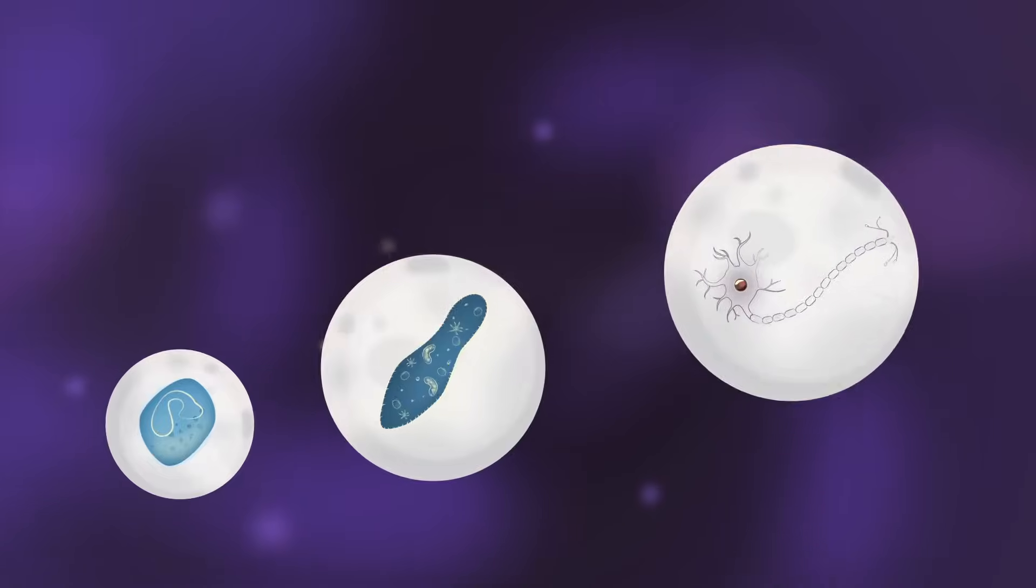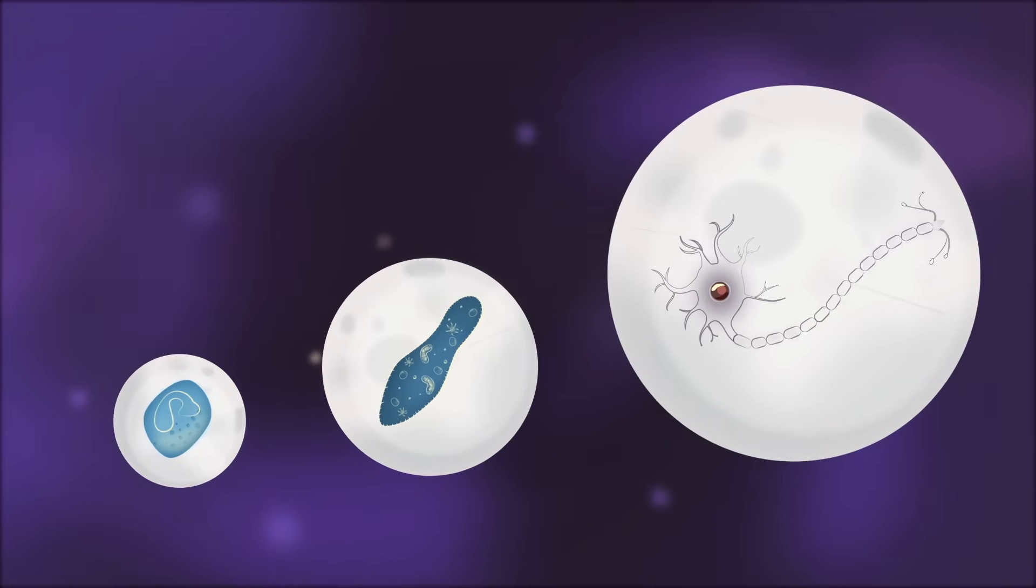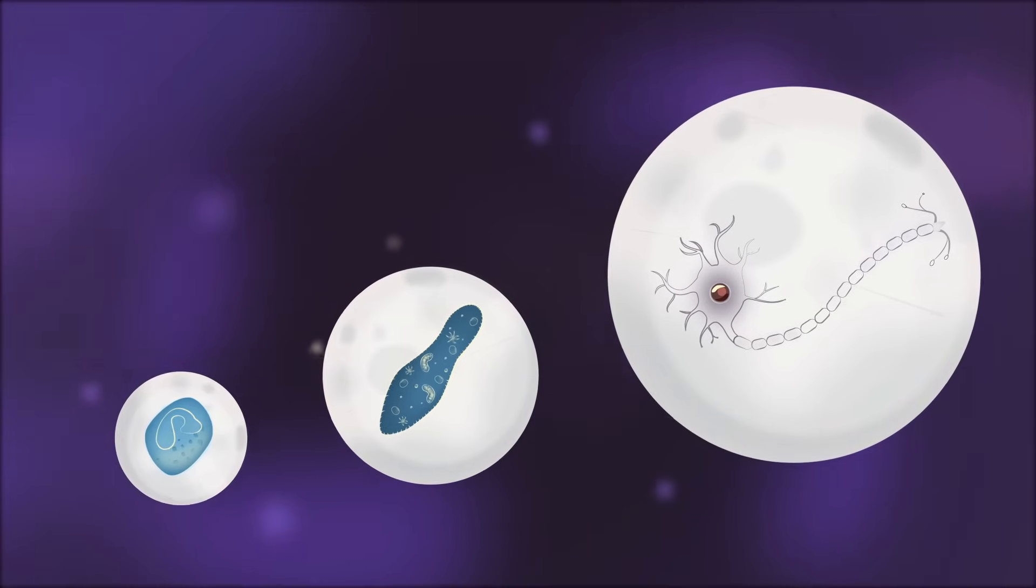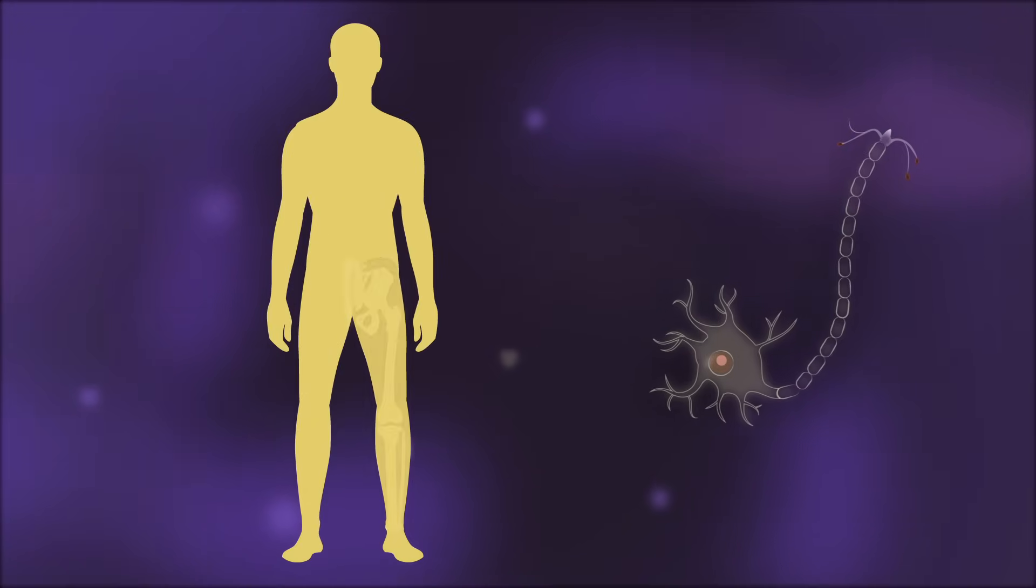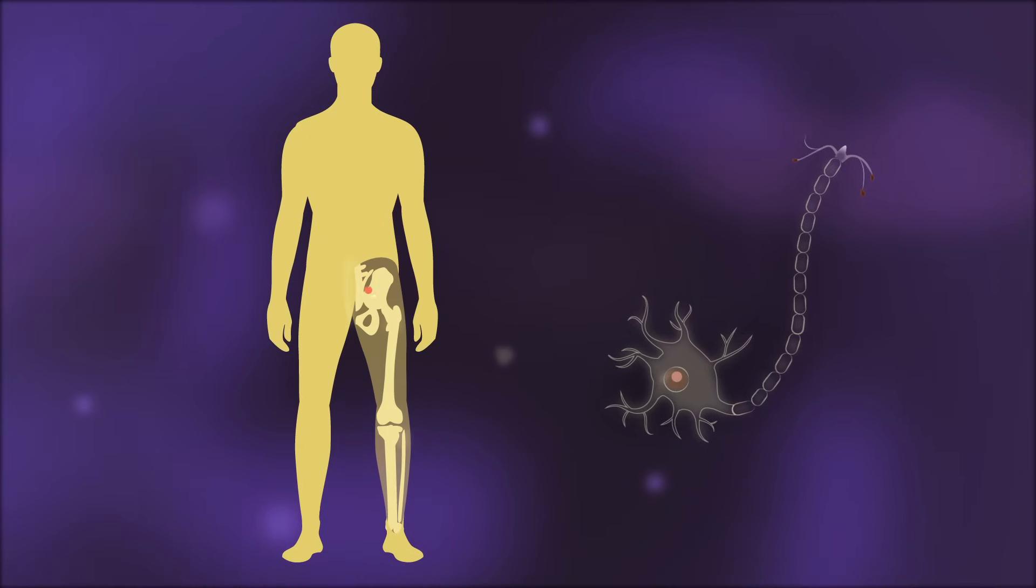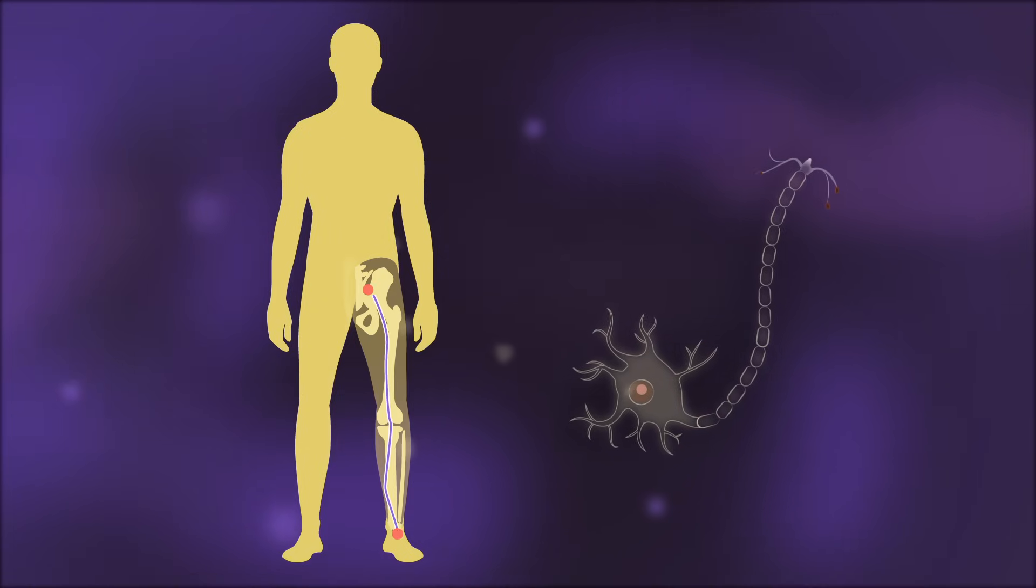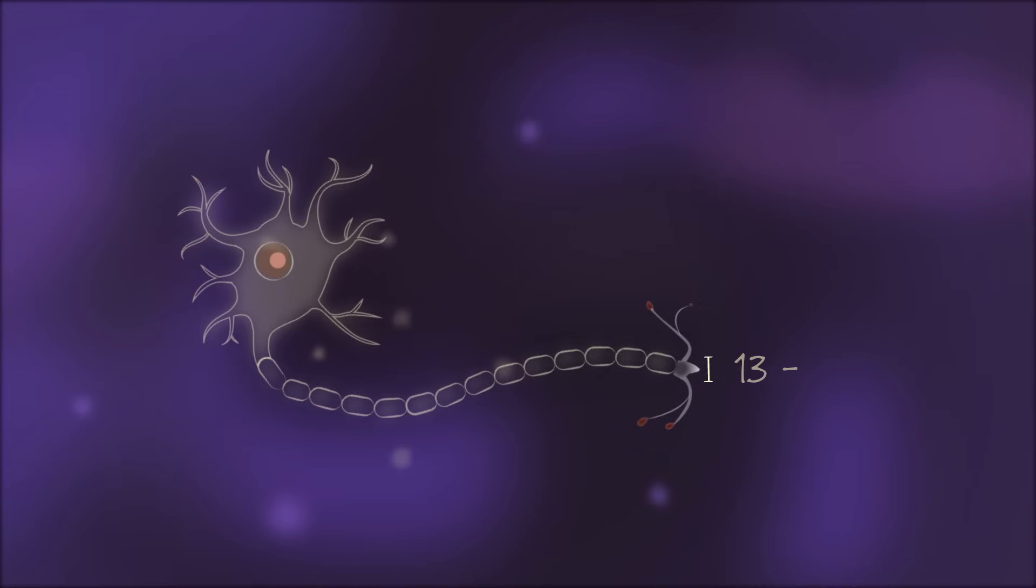Now, there are some exceptionally large cells that have adapted to cheat the system, like the body's longest cell, a neuron that stretches from the base of the spine to the foot. To compensate for its length, it's really thin, just a few micrometers in diameter.